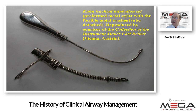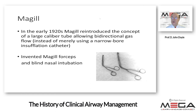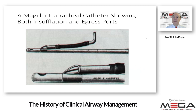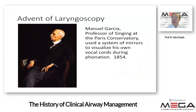Here is the intubation kit with a preformed metal stylet from the collection of instruments from Vienna, Austria. Another common technique was insufflation — in the years leading up to World War One, considerable interest in anesthesia by ether insufflation developed using insufflation catheters. In the early 1920s, McGill reintroduced the concept of a large-caliber tube allowing bidirectional gas flow instead of a narrow-bore insufflation catheter. McGill also invented McGill forceps and popularized blind nasal intubation. Here is a McGill intratracheal catheter showing both insufflation and egress ports.